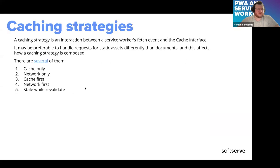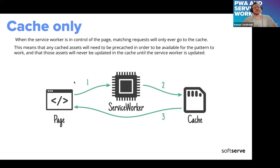Caching strategies — the main bread and butter of PWA. There are five caching strategies: cache only, network only, cache first, network first, and stale-while-revalidate. Cache only is a self-explanatory strategy: when the web application makes a network request, the service worker intercepts it and tries to provide data from the cache only, responding to the web application from cache.